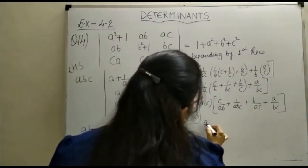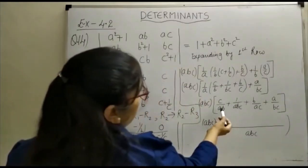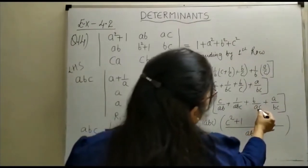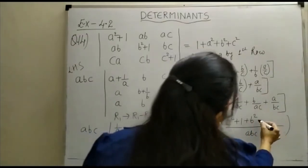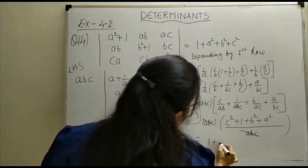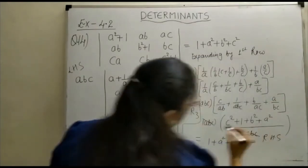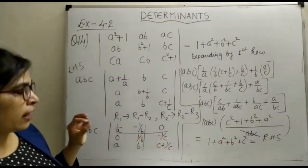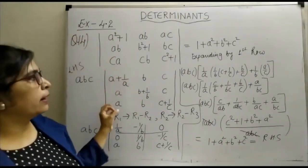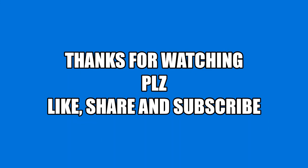Taking LCM as abc: the term c/ab gets multiplied by c giving c², the term 1/abc stays as 1, the term b/ac gets multiplied by b giving b², and the term a/bc gets multiplied by a giving a². The abc in the denominator cancels with the abc factor outside, leaving 1 + a² + b² + c², which equals the right-hand side. This is how we proved the given result by taking abc common from the first, second, and third rows respectively.